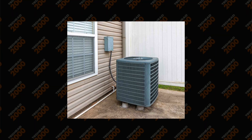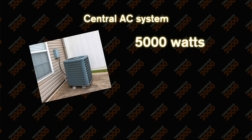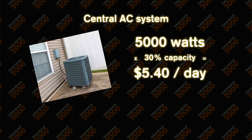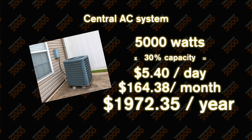Last but not least, central air conditioning — the AC systems made for houses. Just like most things on this list, power consumption varies based on age, model, and environment. But if it's a system rated for 5,000 watts running at 30% capacity, a central air conditioning system will cost you $5.40 per day, $164.38 per month, and a stunning $1,972.35 per year. It almost makes me thankful for these window units.